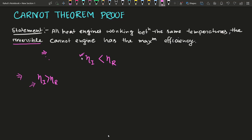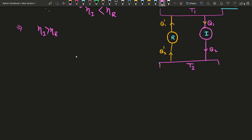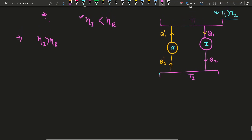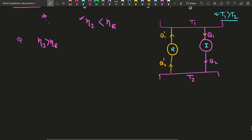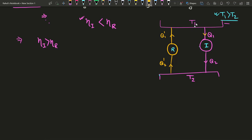So let's begin. Let us consider we have two heat reservoirs, T1 and T2, where T1 is at higher temperature and T2 is at lower temperature, and we have two heat engines — one reversible and one irreversible.